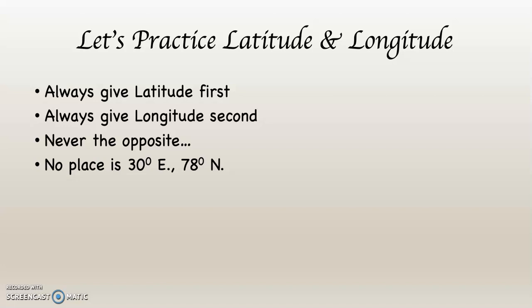By doing this, everybody on the planet is on the same page. Everybody recognizes the place we are talking about. So the correct notation would be 78 degrees north, 30 degrees east — written as 78° N, comma, 30° E, indicating the northern hemisphere and the eastern hemisphere.